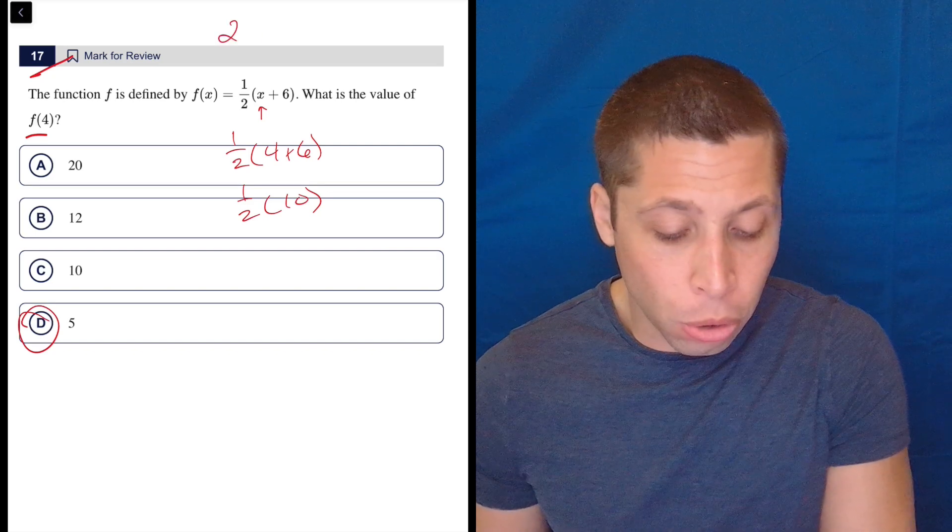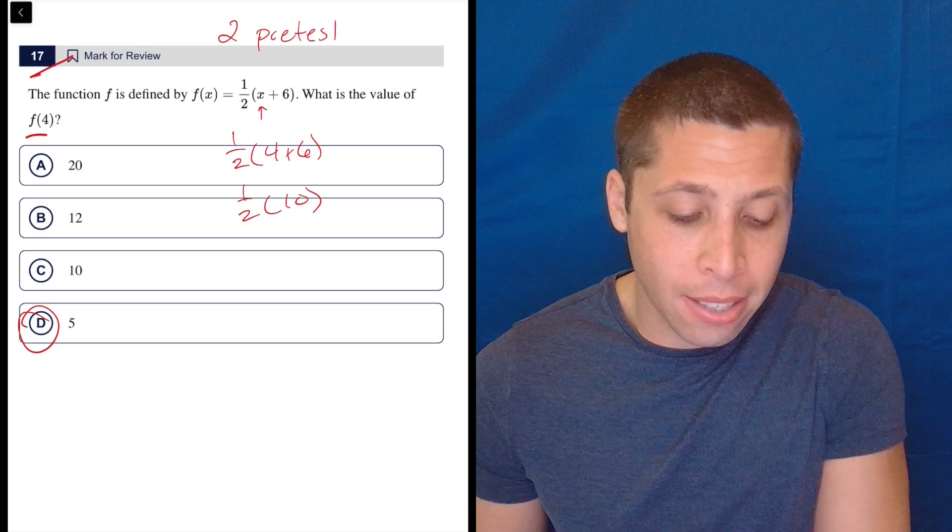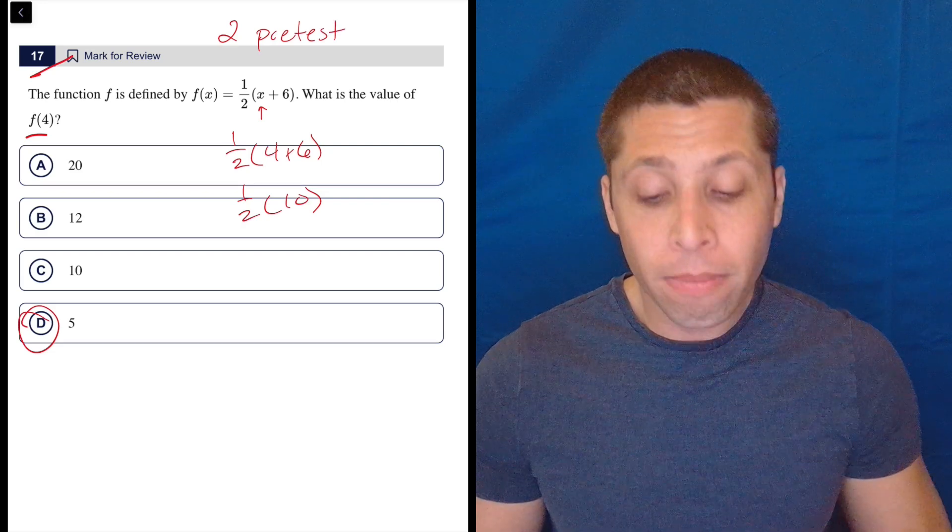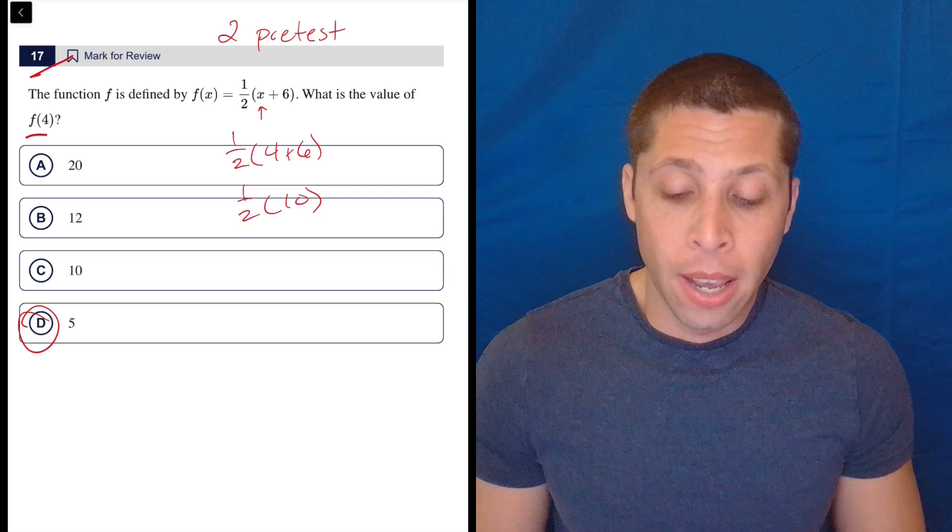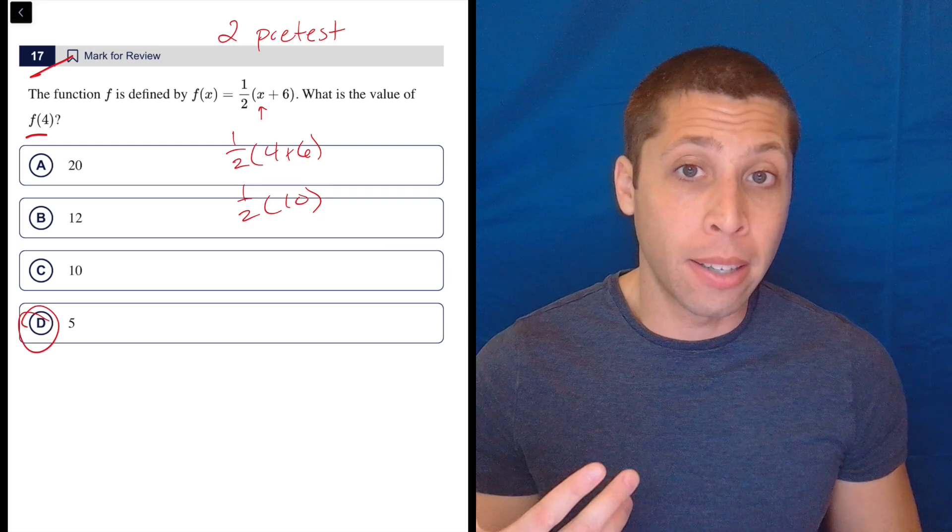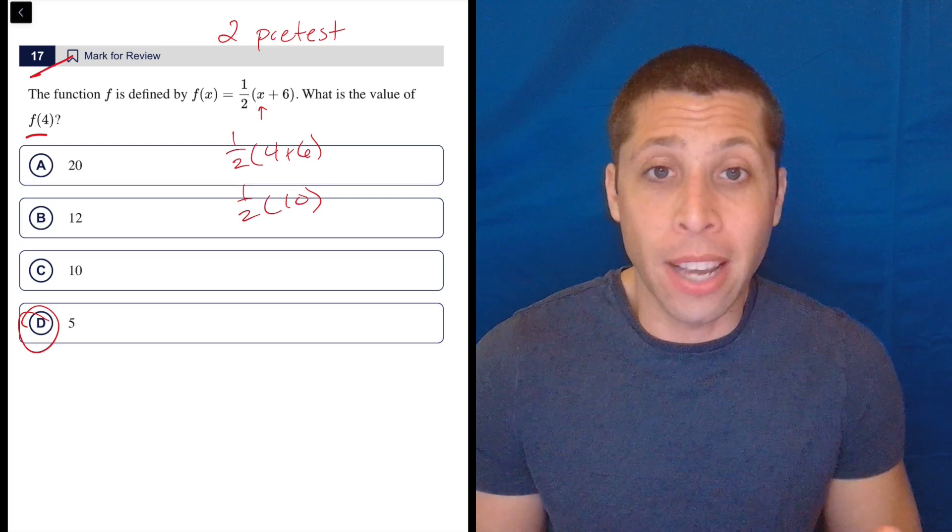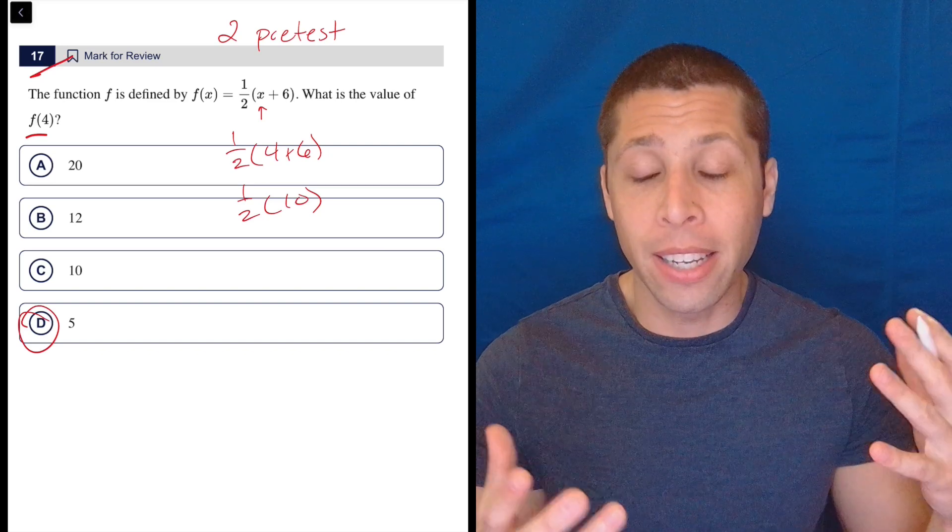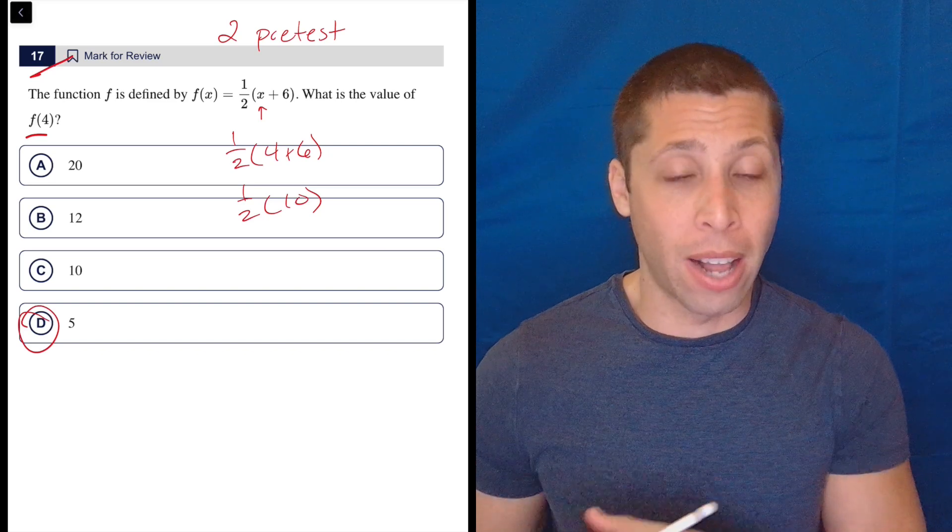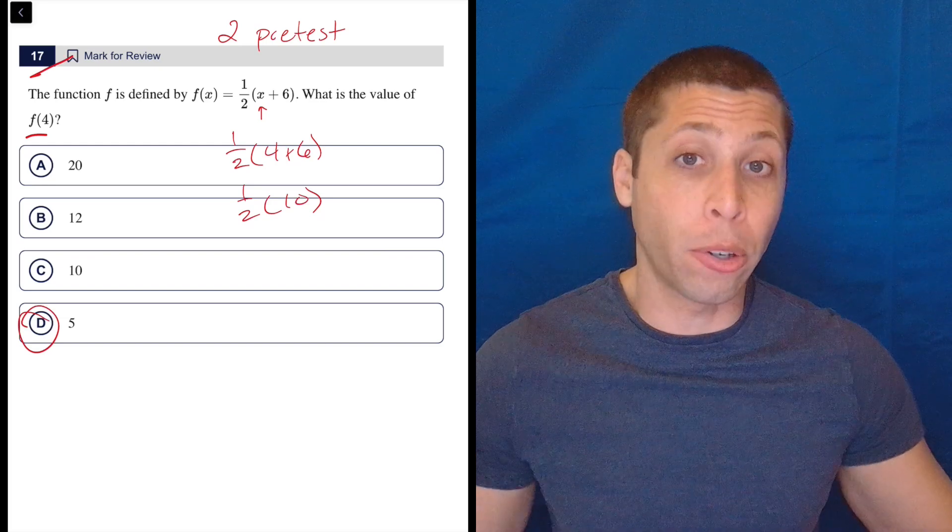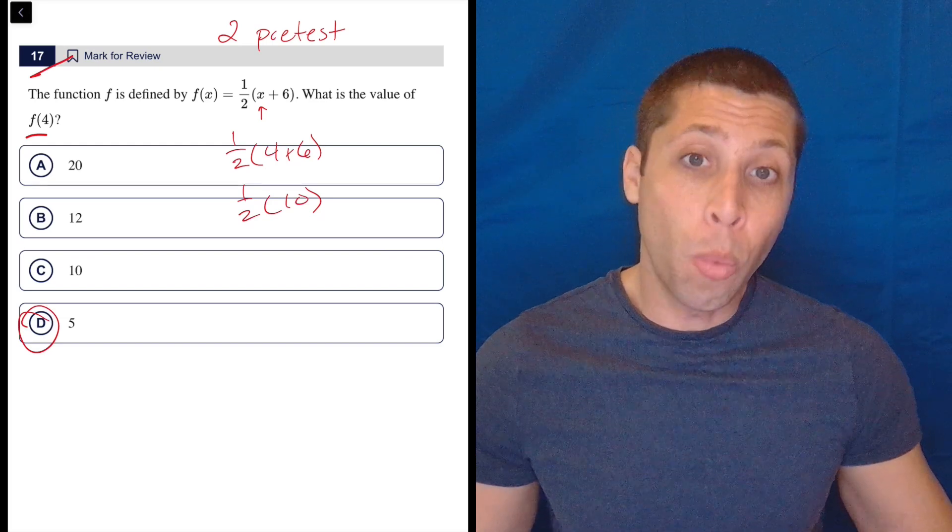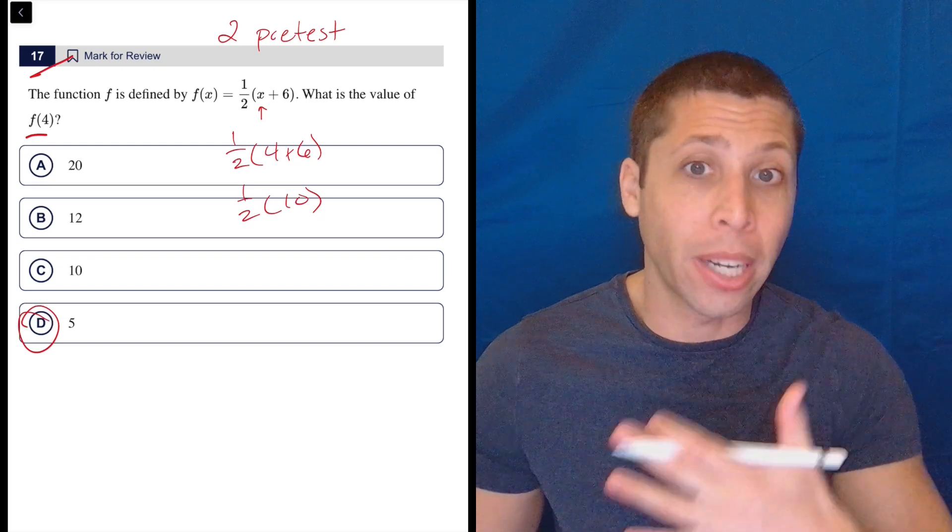There are two what they call pre-test questions. I sometimes call these experimental questions. They don't count for your score. The College Board is using you as a guinea pig to test new questions. They come up with an idea. They're like, we got to see if this is a good question or not. So let's give it to some people. It won't count for their score, but they'll do it among all the other questions that do count for their score. So we'll be able to see.